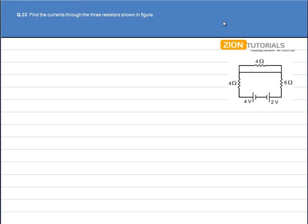Find the current through the three resistors as shown in figure. First of all, let's mark the points as 1, 2, 3, 4.